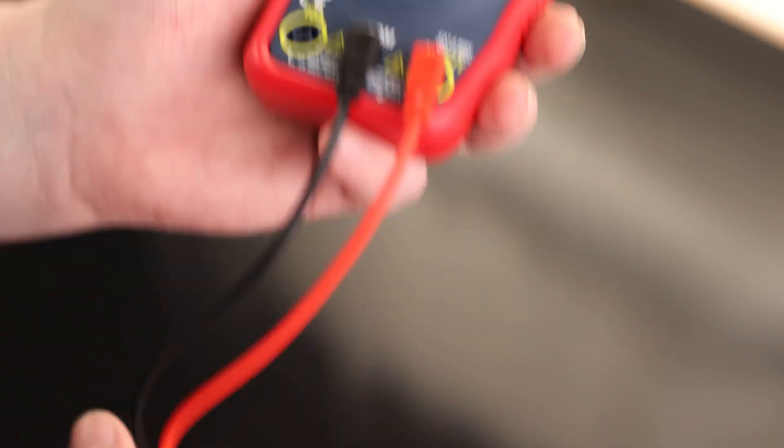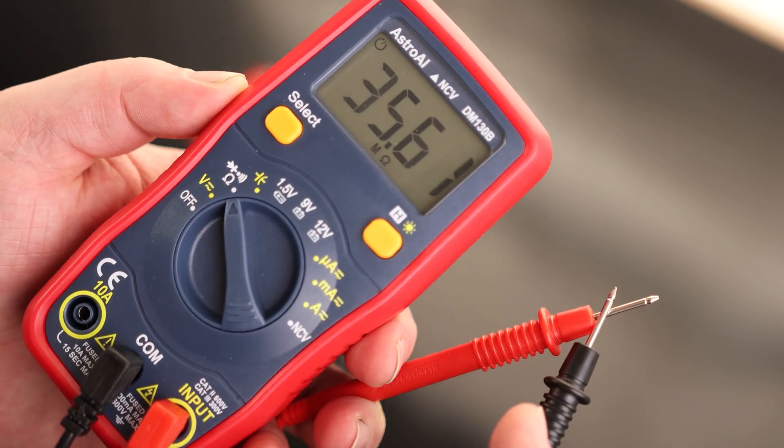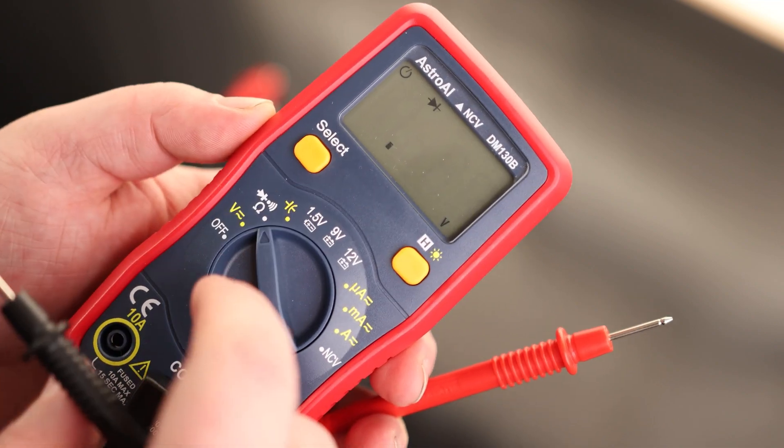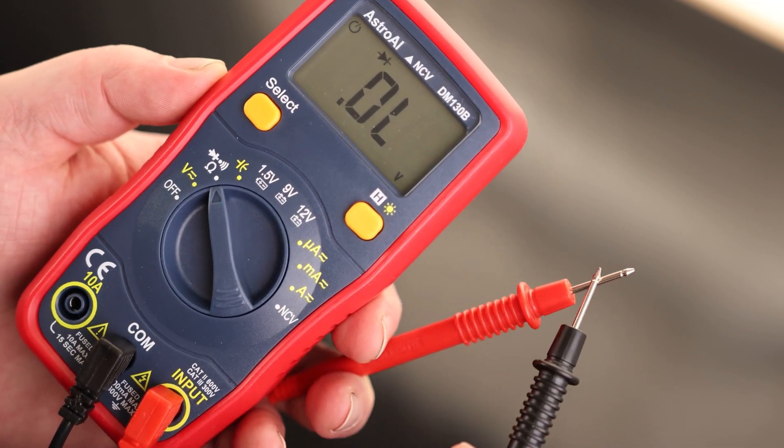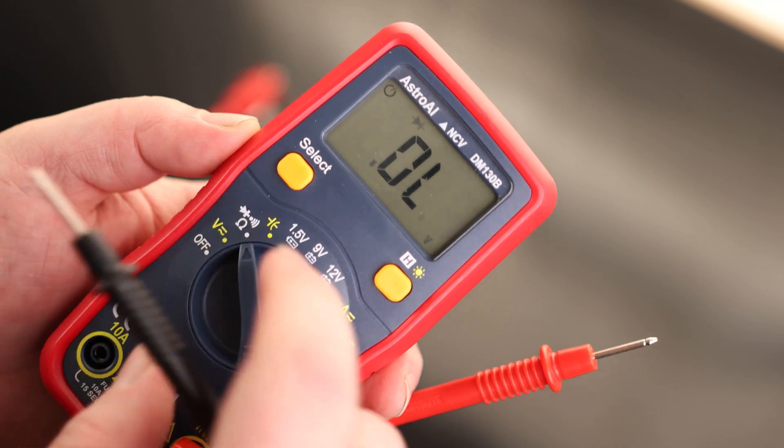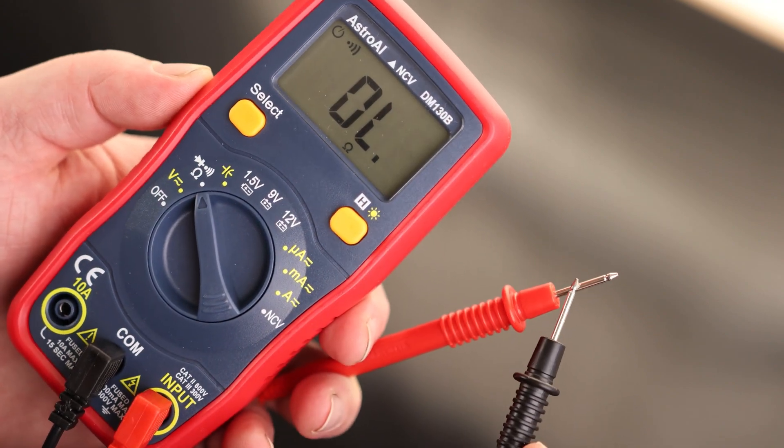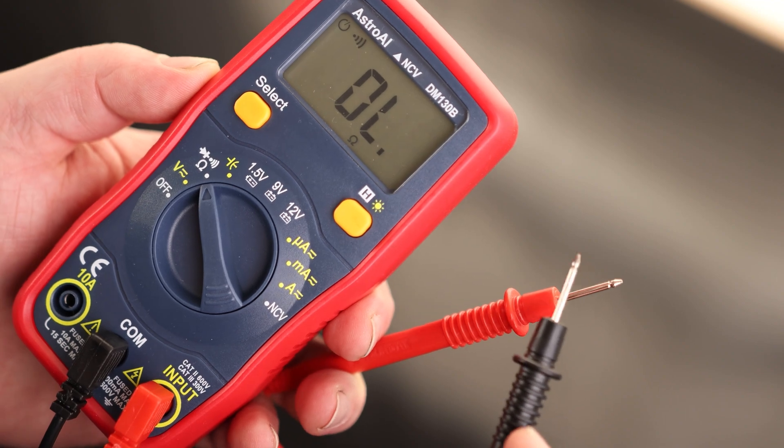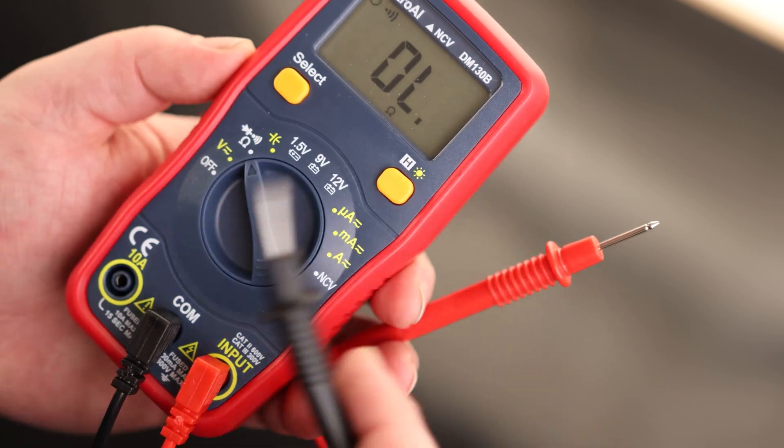We got ohms diode and beep. So right now we're open loop. So if I connect these together, we got continuity. If I hit select, now I can test diodes. This isn't a diode, but. And then we got beep. Cool. So that's nice and fast. I like seeing that.